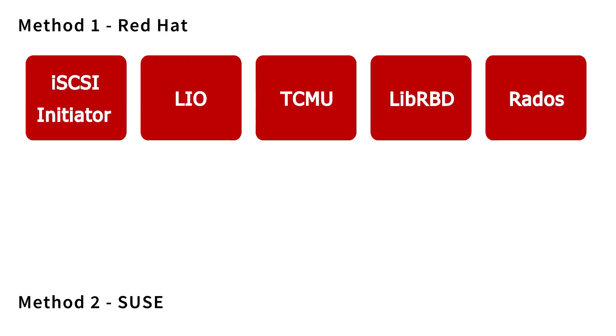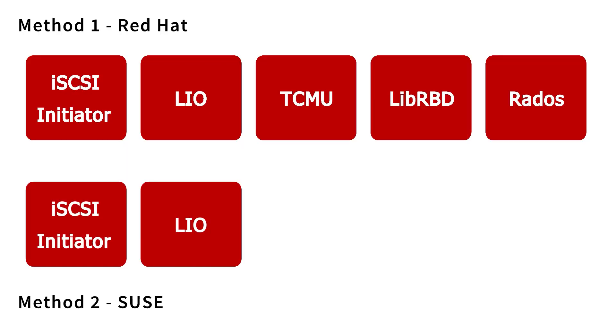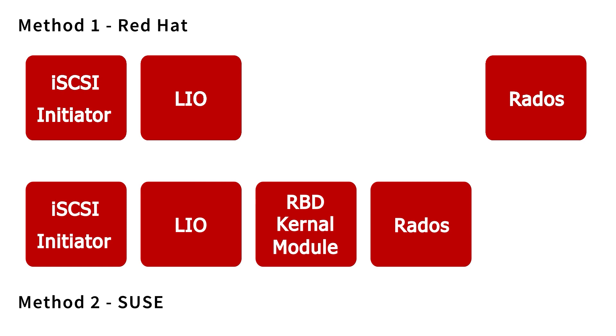It's all in user space, and everyone loves developing in user space because you don't have to deal with all those difficulties of building into the kernel. That's how the Red Hat way functions. The SUSE way — also the PetaSAN way — skips the user space access into the Ceph cluster. They still use LIO because that is the core subsystem of how iSCSI works in Linux, but they have built an RBD kernel module into the kernel, and that's how LIO speaks directly to the RBD images on your Ceph cluster. It cuts two of the user space layers out and puts it right in the kernel.